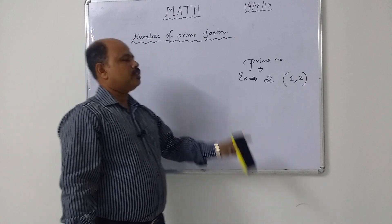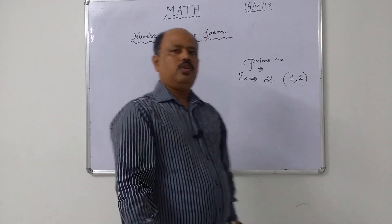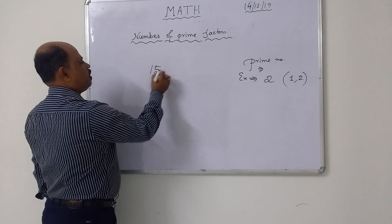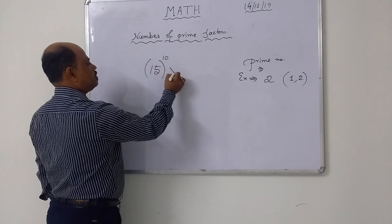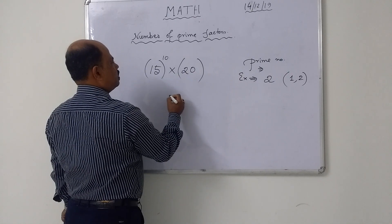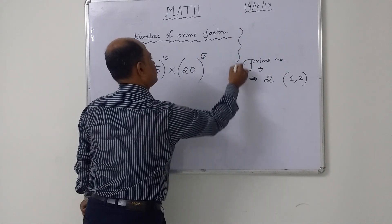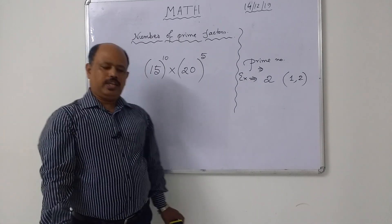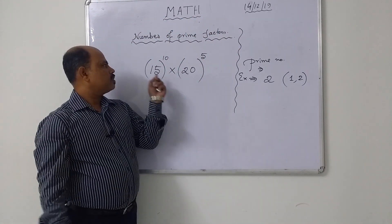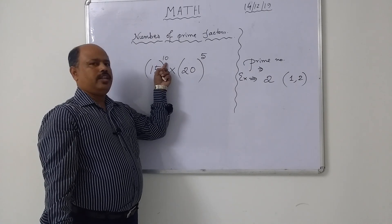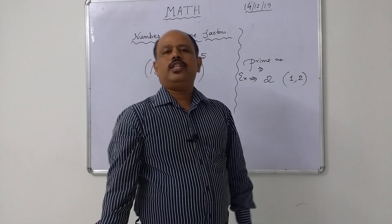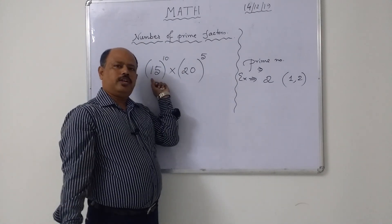Number of prime factors — let me show you the rule. Look carefully: 15 to the power 10, into 20 to the power 5. That is the expression. You have to find the number of prime factors. To find the number of prime factors, all base numbers should be prime.